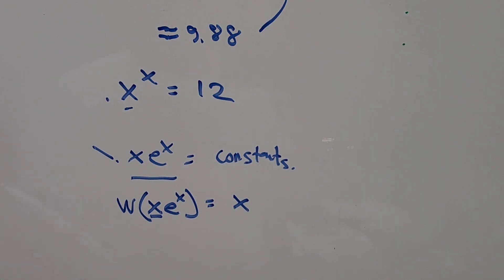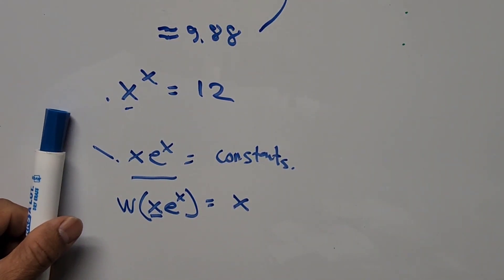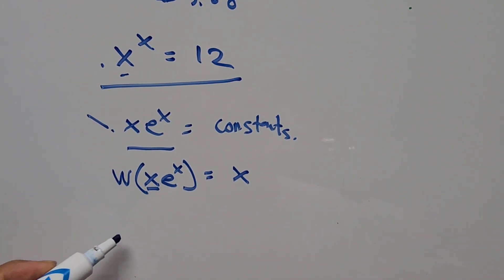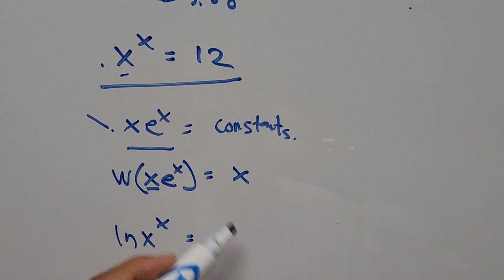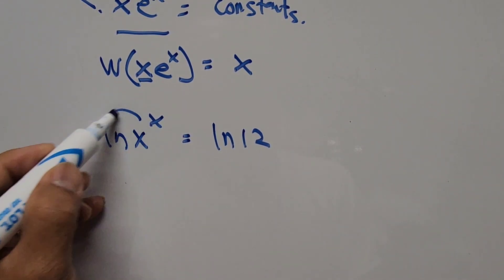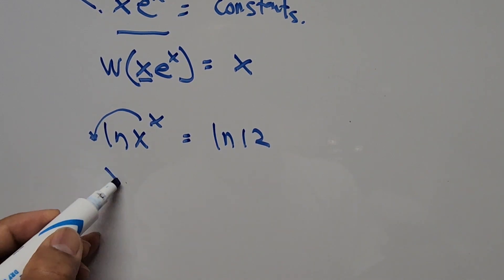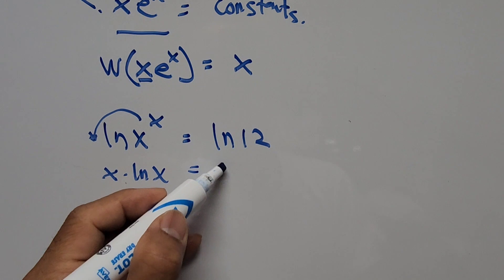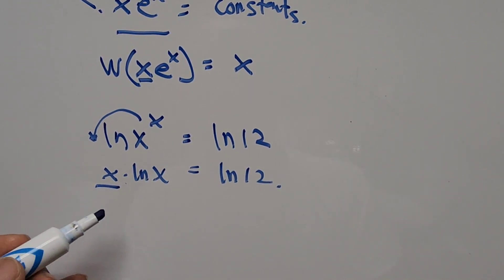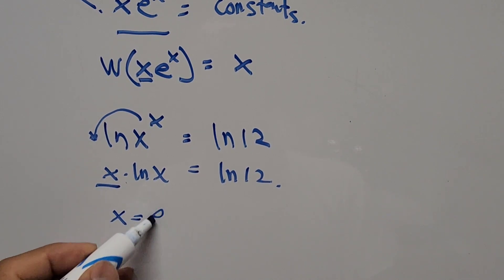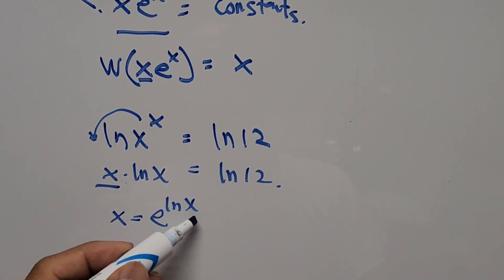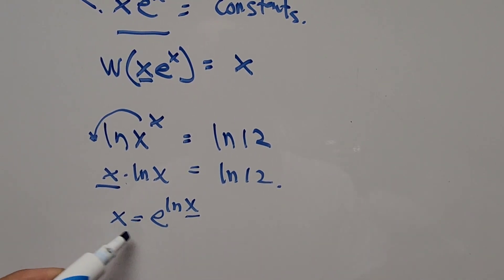First, we take the natural logarithm of both sides: ln(x^x) = ln(12). Using the logarithm power rule, we bring the exponent down as a coefficient: x times ln(x) = ln(12). We can then express x as e to the power of ln(x), since e^(ln x) cancels to give just x. Now we substitute this into our equation.